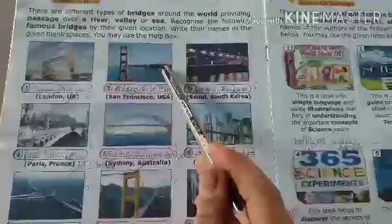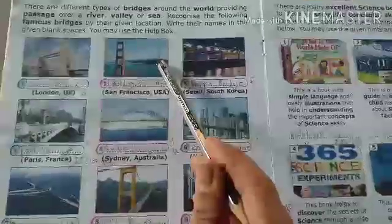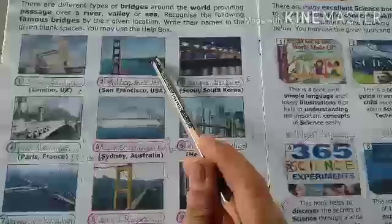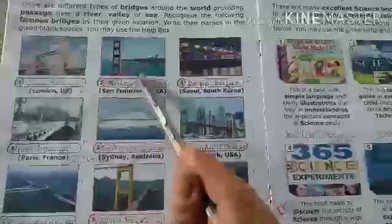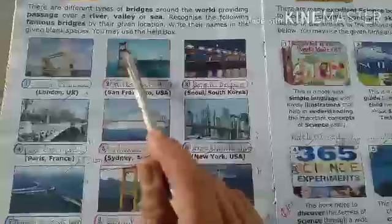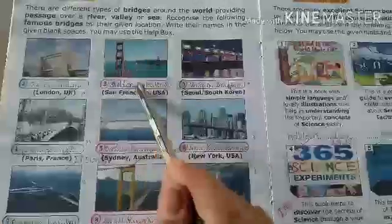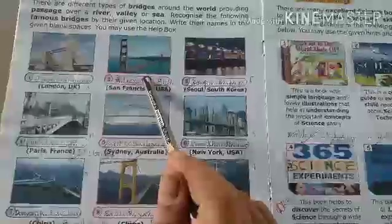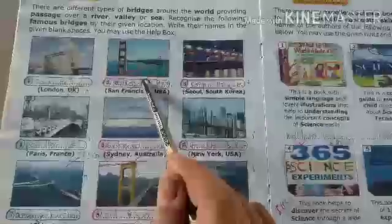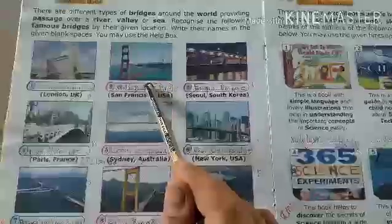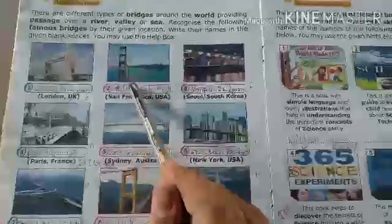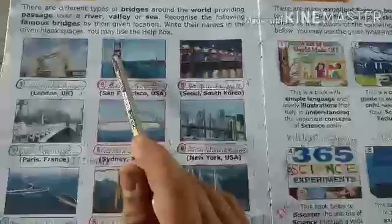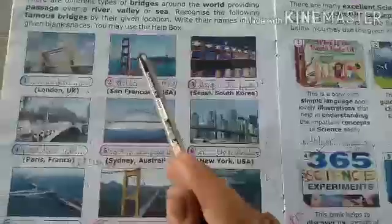Next — what is this second bridge? This bridge is in San Francisco, USA. This is called the Golden Gate Bridge. What is the name of the bridge? Golden Gate Bridge.